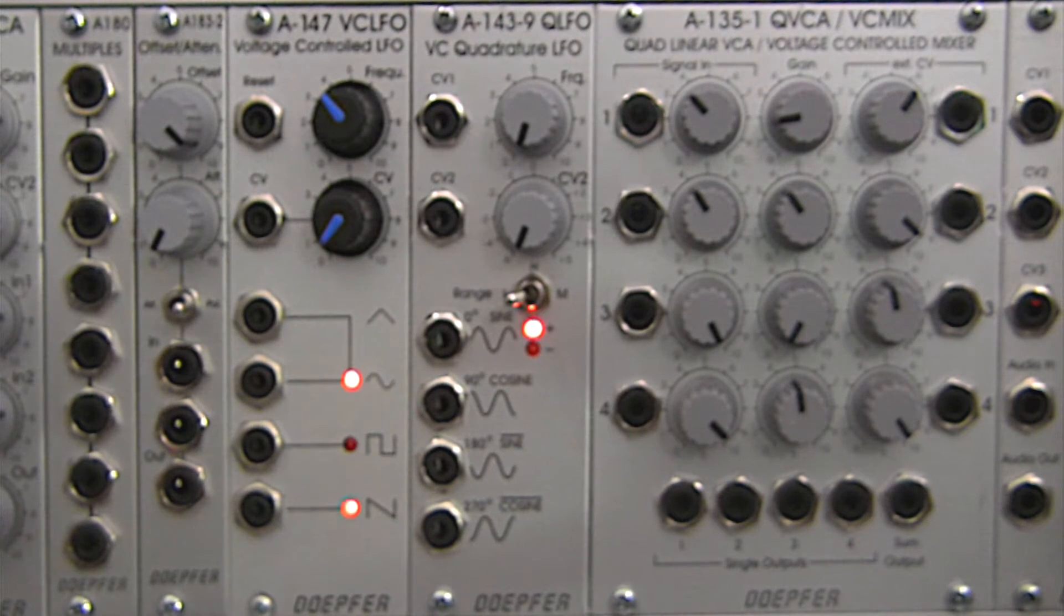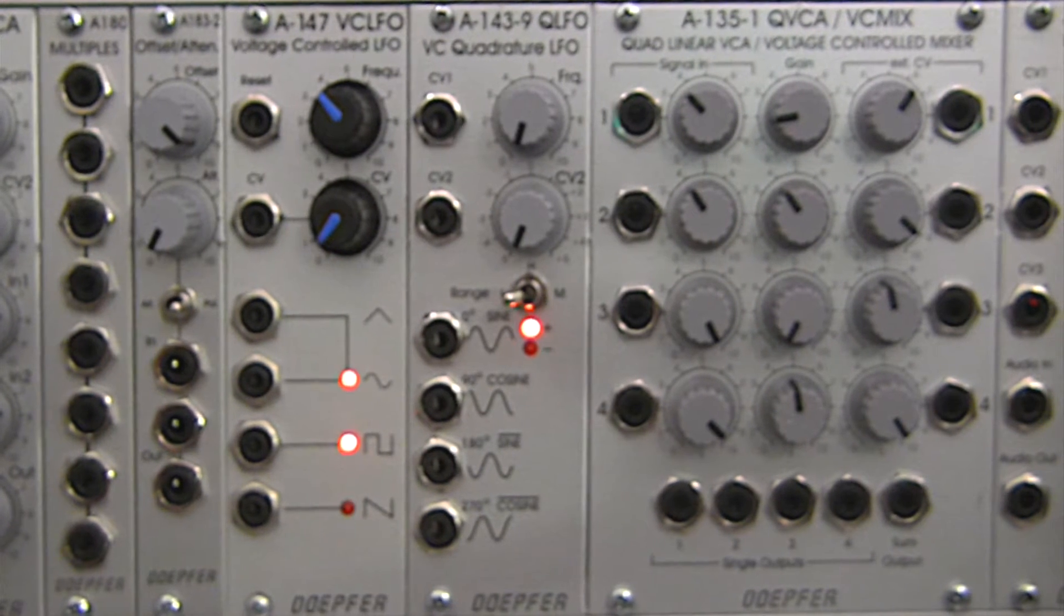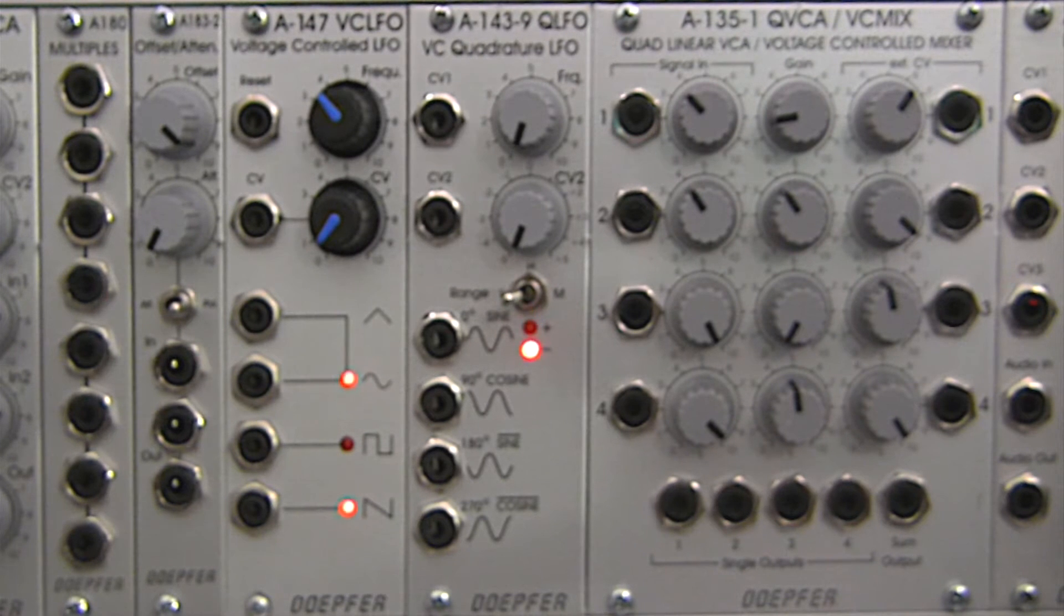So I thought it would be useful to see what exactly a VCA is doing to our signals. Originally, I thought I was going to do DC signals and AC signals, but for the most part, the behavior is going to be the same and the visuals are going to be the same as well. So without further ado, let's just jump right in and see what I'm talking about.